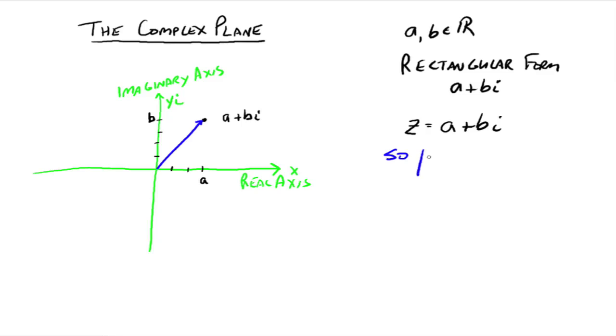So the absolute value of a complex number z would be equal to, well, that's just the Pythagorean theorem, and you'd have the square root of a squared plus b squared. Because the absolute value of a number can be defined to be its distance from zero, or its distance from the origin is another way you can think about that. So we're just saying, when we use this notation, how far is this number z away from the origin? Well, that would be the hypotenuse of this right triangle here, and that's easy to figure out what that distance would be.